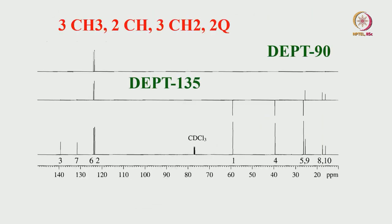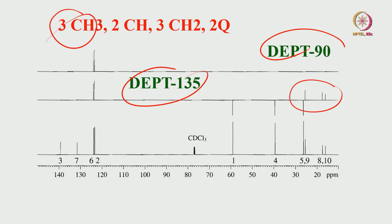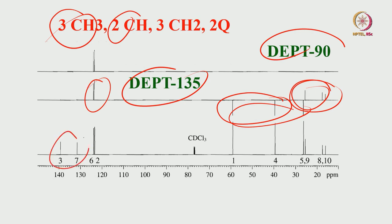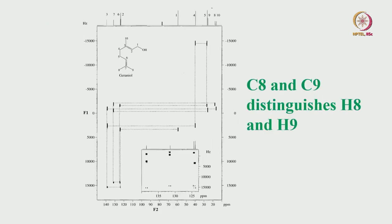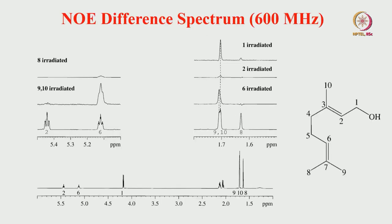We can also identify how many protons are present — CH₂ and CH₃ — using DEPT-90 and DEPT-135. This experiment confirms there are 3 CH₃ groups, 2 CHs, and 3 CH₂s (negative in DEPT-135), and of course 2 quaternary carbons which have no effect. From the normal spectrum combined with COSY, HSQC, HMBC, and INADEQUATE, we can distinguish and correctly assign chemical shifts for all protonated carbons.